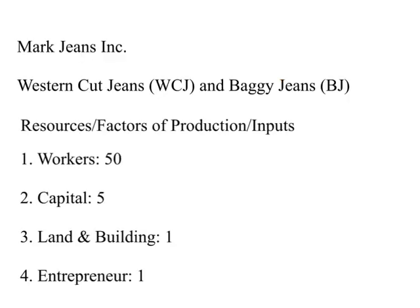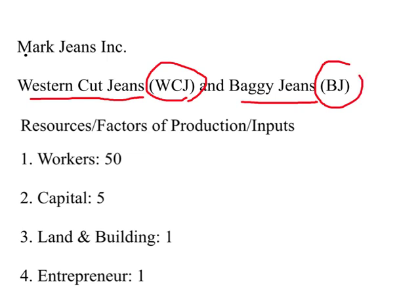Let us look at a company called Mark Jeans Incorporated. This company produces two types of jeans: one called Western Cut Jeans and the other called Baggy Jeans. Since we'll be using these again and again, we can abbreviate them as WCJ for Western Cut Jeans and BJ for Baggy Jeans.